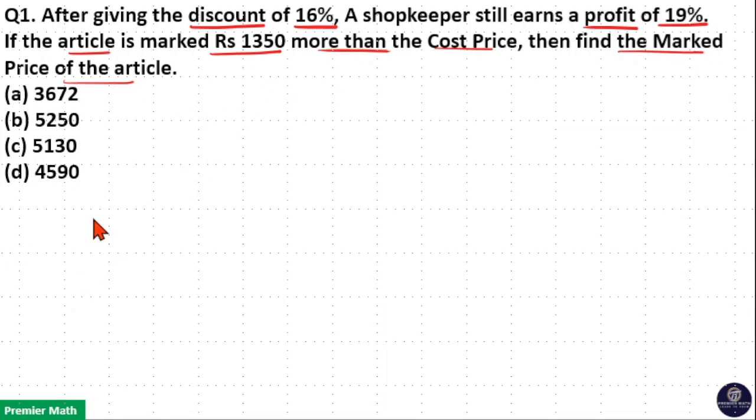Here you can solve this question in two methods. First is formula method. You already know cost price and mark price ratio is 100 minus discount as cost price and 100 plus profit as mark price.